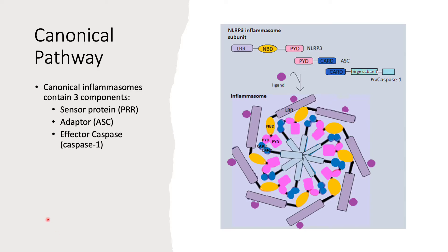Let's get into the canonical pathway and deconstruct the inflammasome. The canonical inflammasome contains three components: a sensor protein (the PRR — pattern recognition receptor), an adapter (the ASC), and an effector caspase. In the canonical pathway, that effector caspase is caspase-1, which is very characteristic of pyroptosis.